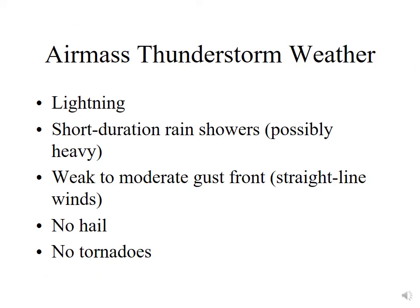The weather associated with air mass thunderstorms includes lightning — which requires ice in the cloud. These storms are typically short duration, less than an hour or two. You can get rain showers, possibly heavy. We can have a weak to moderate gust front — when cold air from the precipitating cloud descends, accelerates to the ground, and spreads out in all directions, that generates a gust front. These air mass thunderstorms do not typically produce hail and do not typically produce tornadoes.